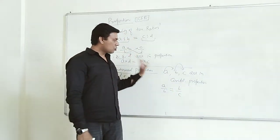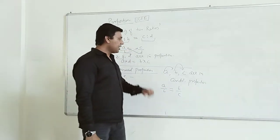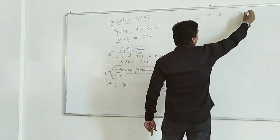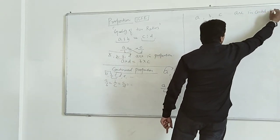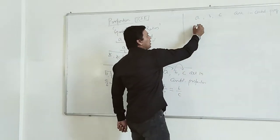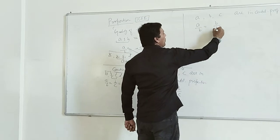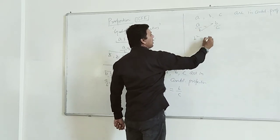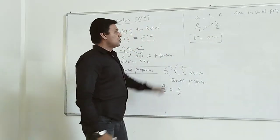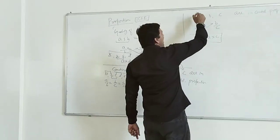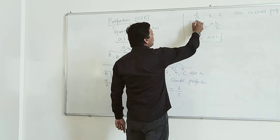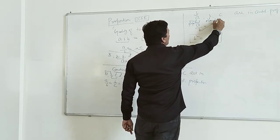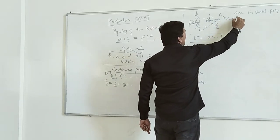Particularly taking three numbers A, B, C in continued proportion: A upon B equals B upon C, so B square equals A into C. If these three terms are in continued proportion, then A is called first proportional, B is called mean proportion, and C is called third proportion.